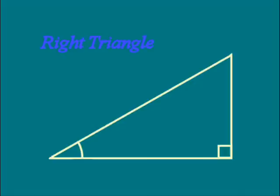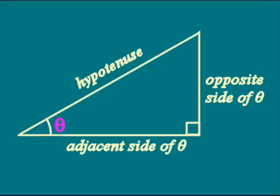The trig functions are ratios of the sides of a right triangle, so we have to name the sides. Let's call the angle theta. We all know that the longest side is called the hypotenuse. The side opposite theta is called its opposite side, and the third side is called its adjacent side.